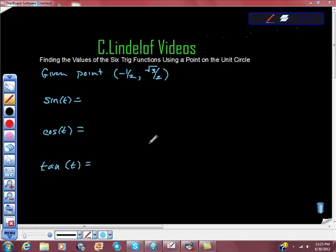Without talking about what angular value that corresponds to, we can still find the sine value. We know sine of t is equal to the y value, so that's just equal to square root of three over two. We also know that cosine of t is equal to the x value, and that's equal to negative one-half.